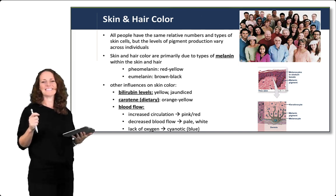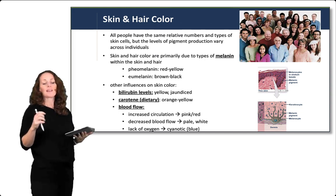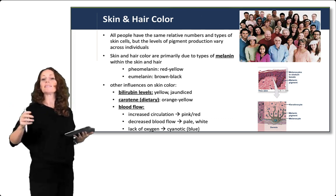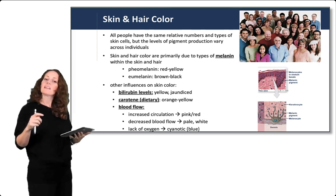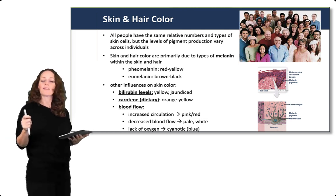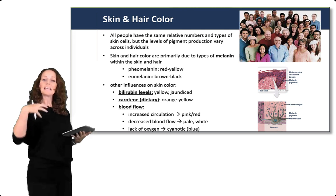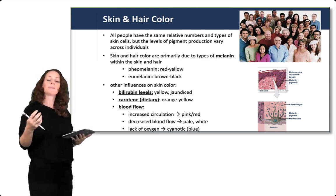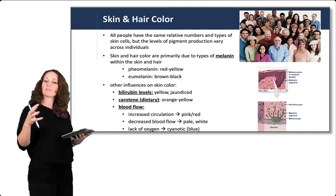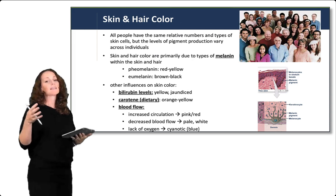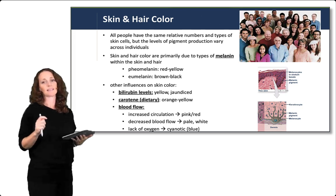There are other influences on skin color. Bilirubin levels in the body can create a yellow tone, referred to as a jaundiced appearance when bilirubin levels are high. Carotene, available from the diet, produces an orangish-yellow color. Blood flow is also an important contributor: increased circulation appears pink or red, decreased blood flow appears pale or white, and a lack of oxygen — due to the change in the color of hemoglobin — can create a cyanotic or blue tone to the skin in that area.